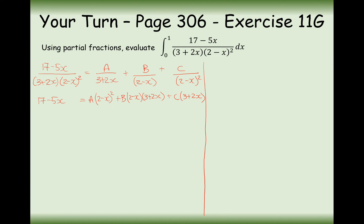Now we substitute in strategic values of x so that one or multiple brackets cancel out. The first strategic value is x equals 2, which will cancel both the A term and the B term, leaving only the C term. Substituting 2 on the left-hand side gives 17 minus 10, which equals 7.